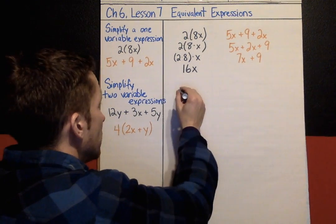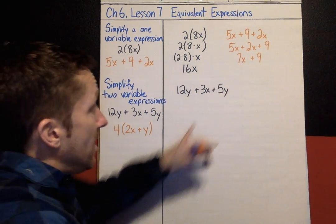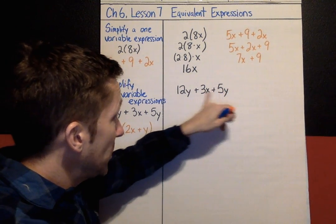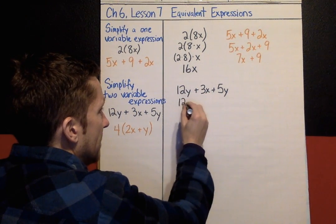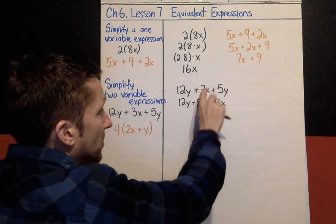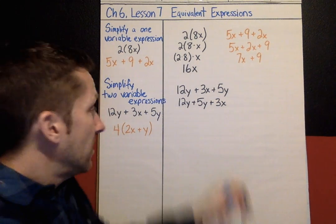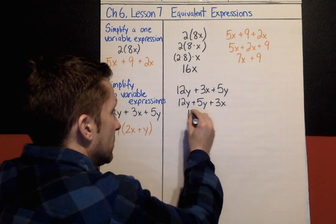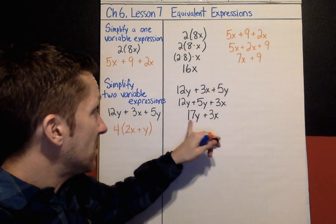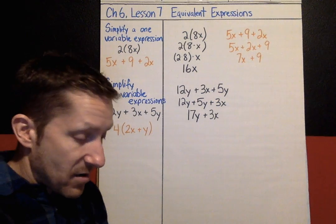For the first one — 12y plus 3x plus 5y — I'm going to use the commutative property to switch the order and rewrite it as 12y plus 5y plus 3x. Now I've got like terms: my y's can be combined. 12y plus 5y makes 17y, so the expression simplifies to 17y plus 3x. I cannot combine x's with y's, so that's as far as I can go.